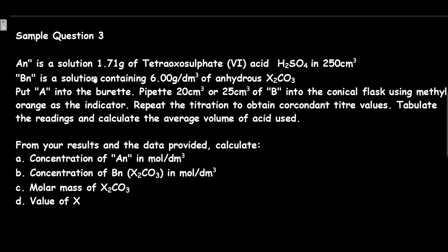AN is a solution of 1.71 grams of tetraoxosulphate VI acid H₂SO₄ in 250 cm³. BN is a solution containing 6.00 grams per dm³ of anhydrous X₂CO₃. This X is an unknown element we might be asked to look for.